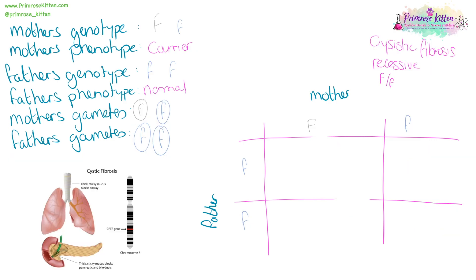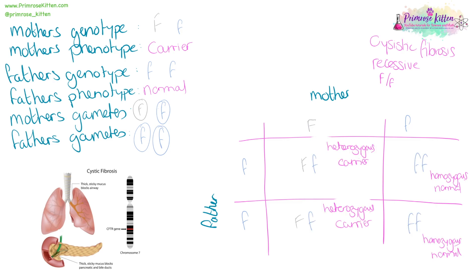Cystic fibrosis is a recessive disease. So as we saw in the first example, if we have two parents that are carriers, there is a one in four chance of an offspring having the disease. If only one parent is a carrier, the chances of the baby having cystic fibrosis are virtually nothing apart from a brand new mutation, and the chances of being a carrier are 50%.